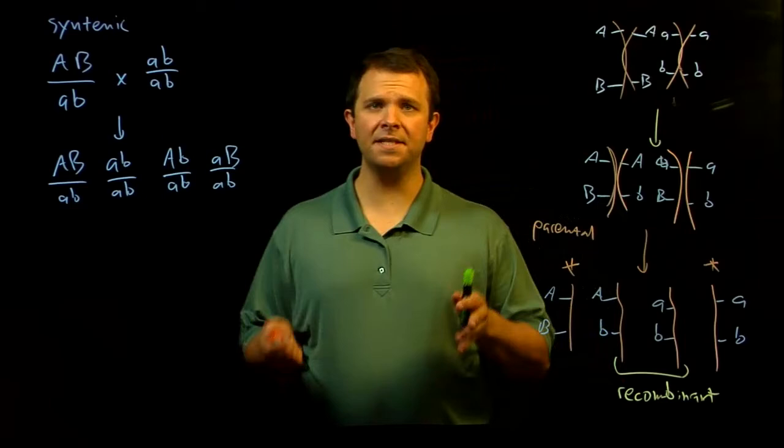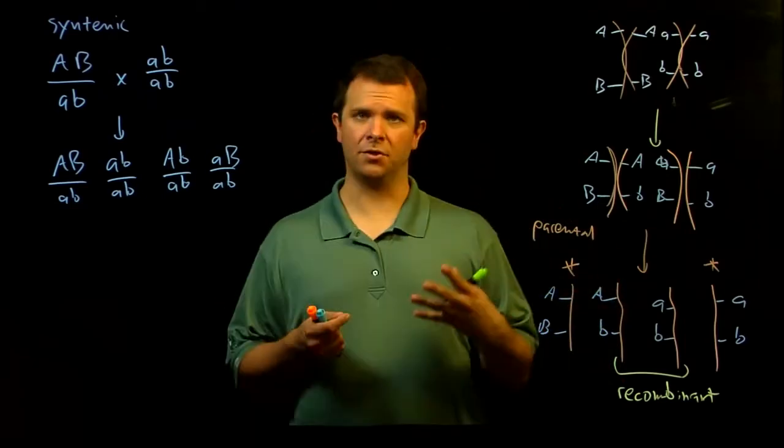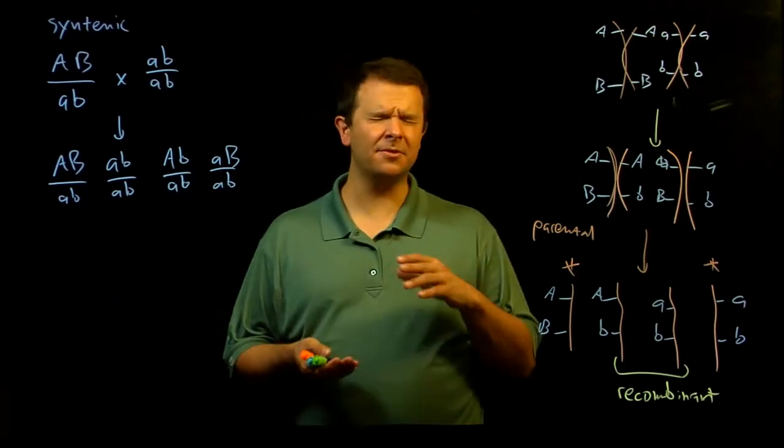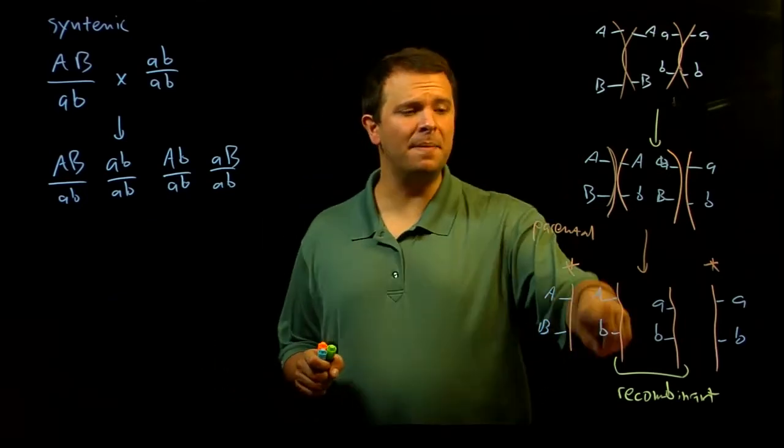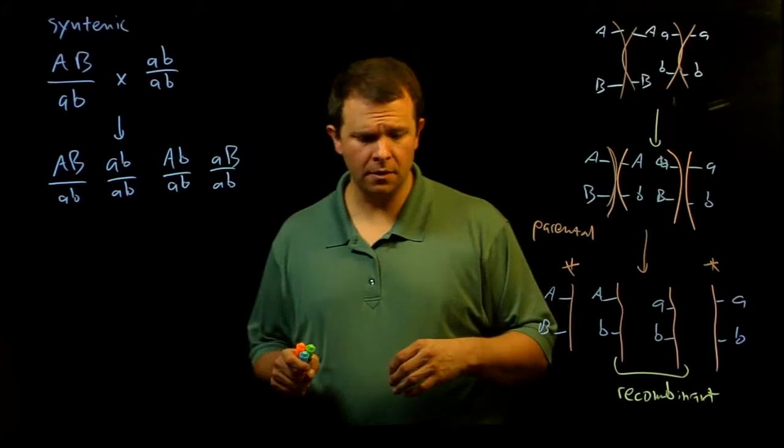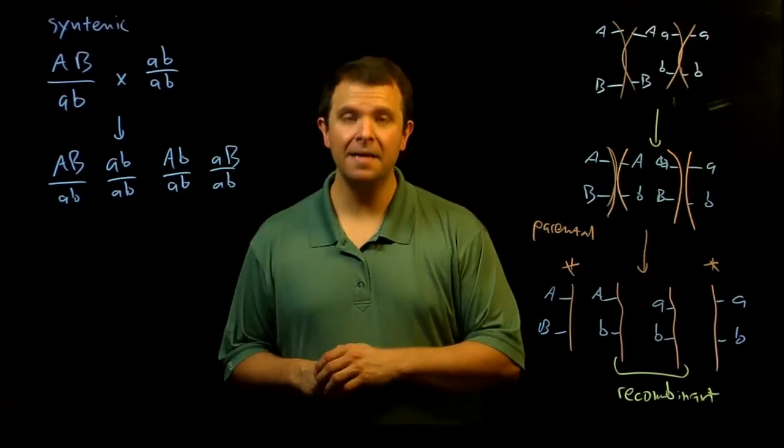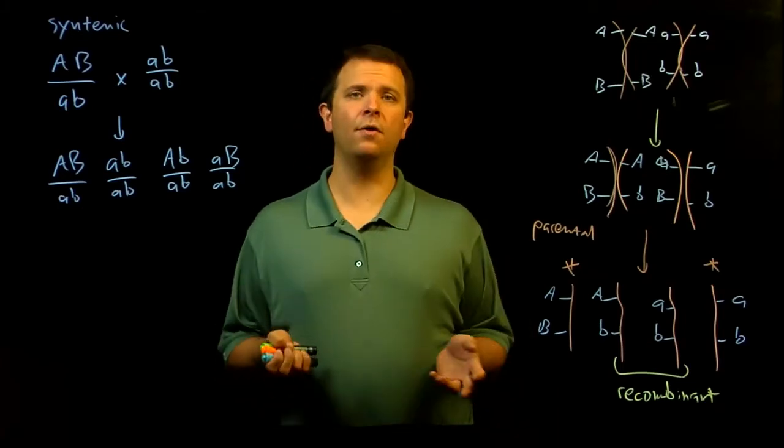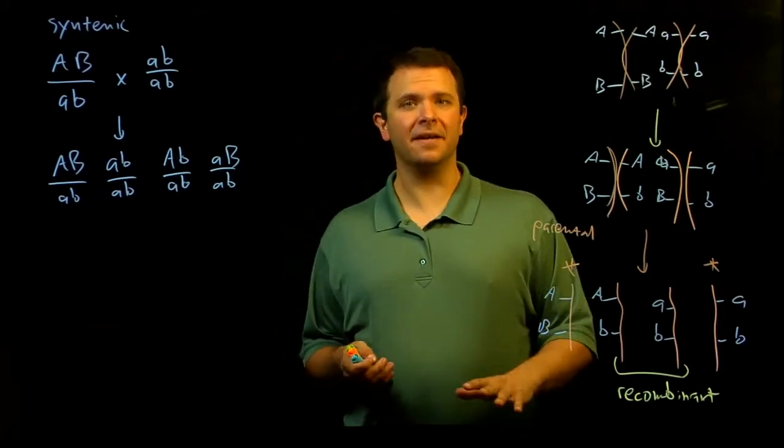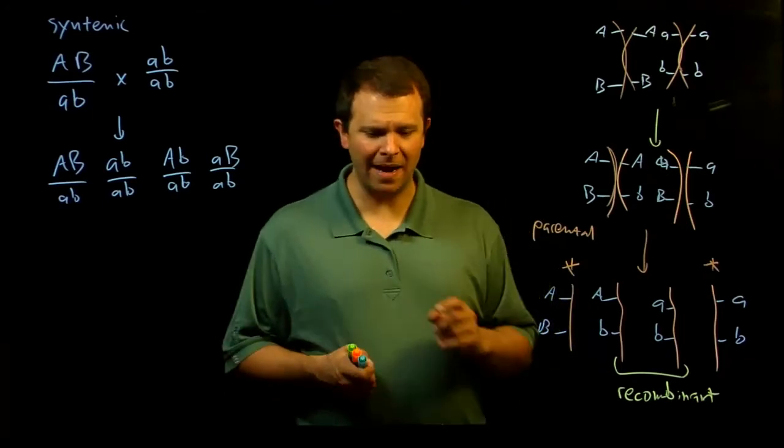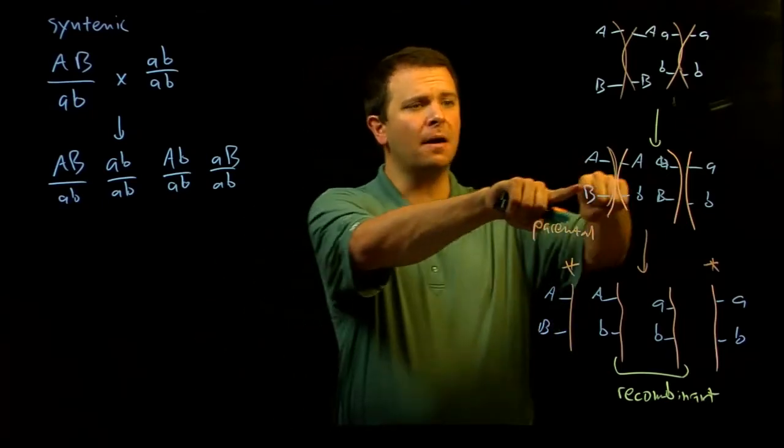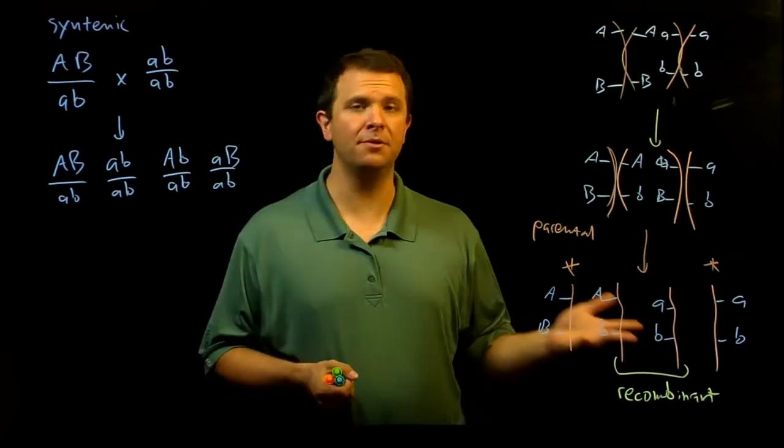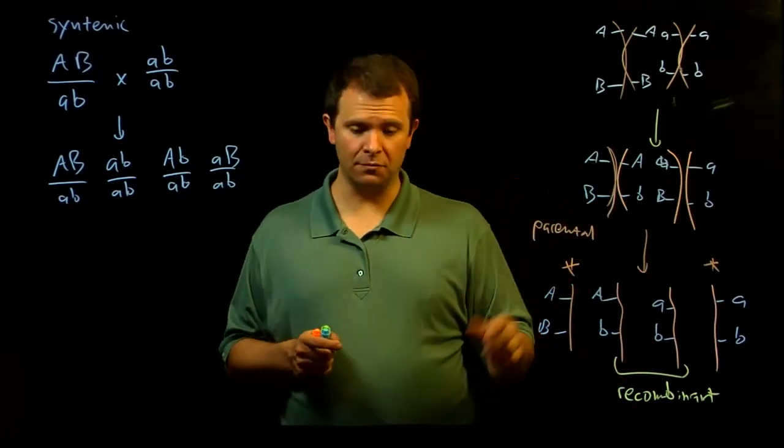So there are a few things to note about this recombination. The first is that it bears stating explicitly that the probability of crossing over between two locations on a chromosome depends on how far apart they are on the DNA molecule. If crossing overs happen randomly, which is an assumption we're going to come back to, then the further apart two genes are, the more likely it is that a crossing over will happen between them and the two alleles will recombine.